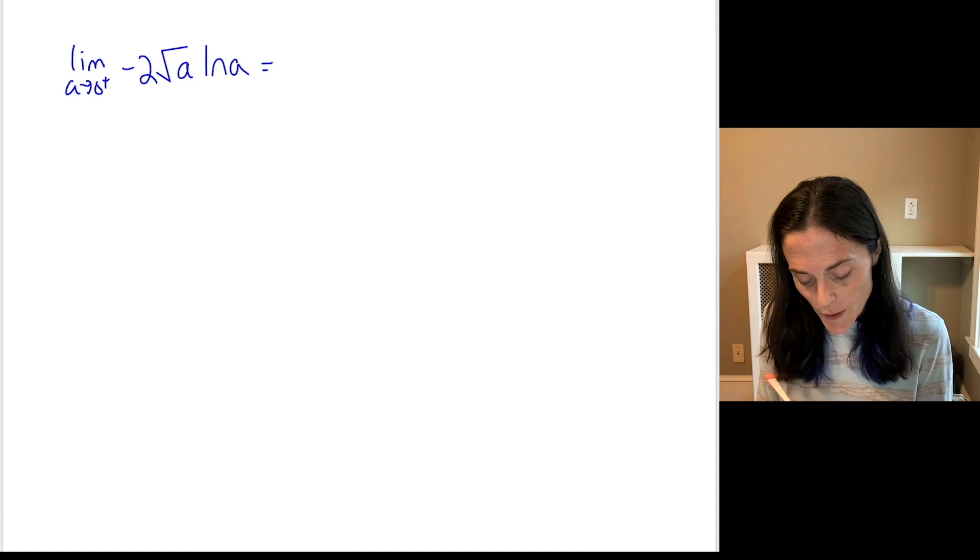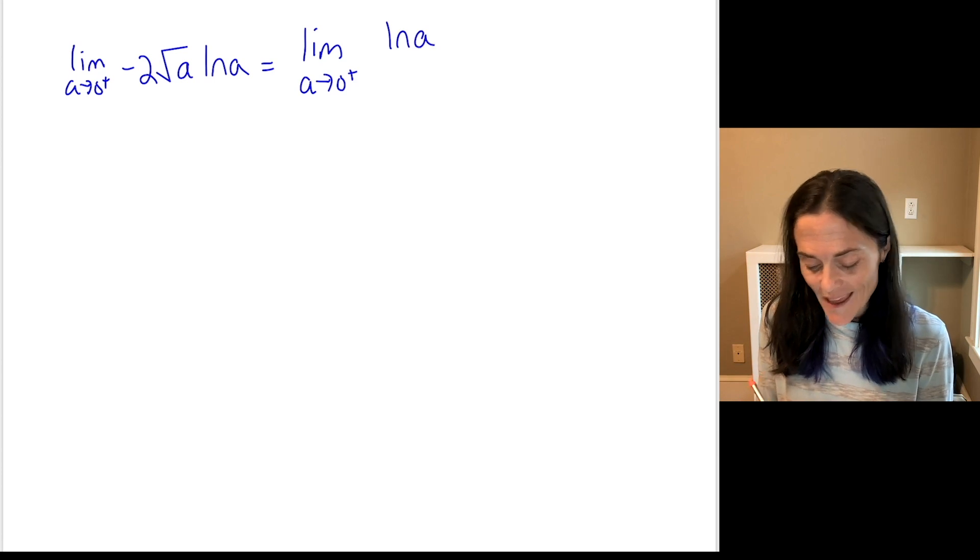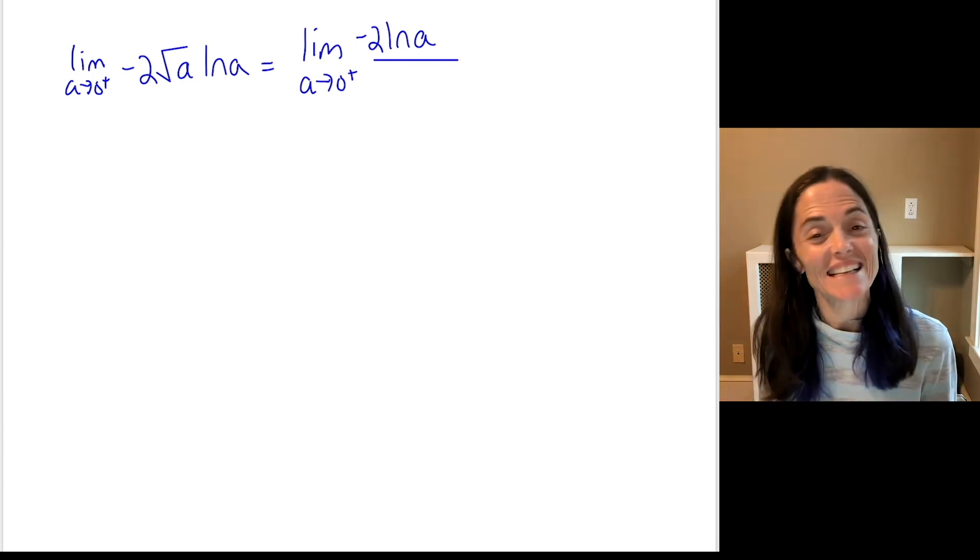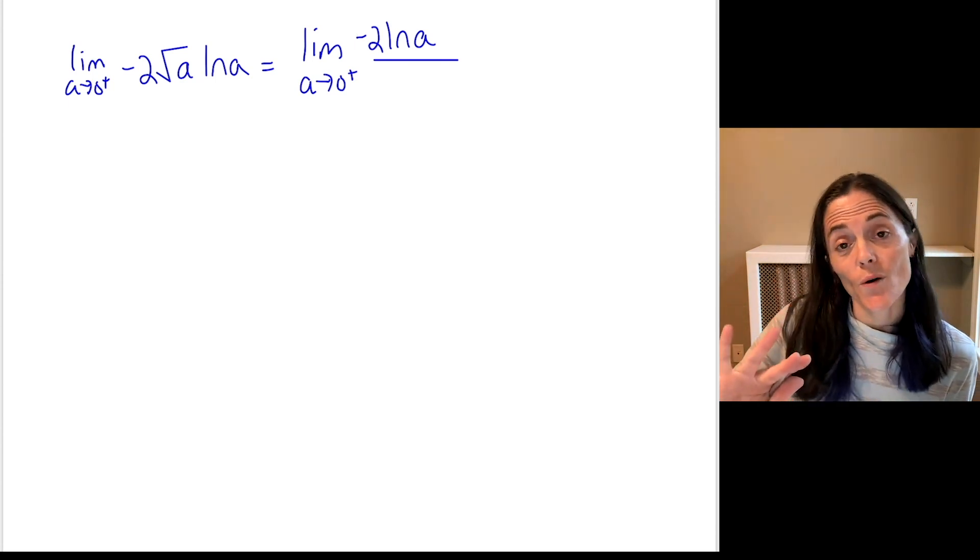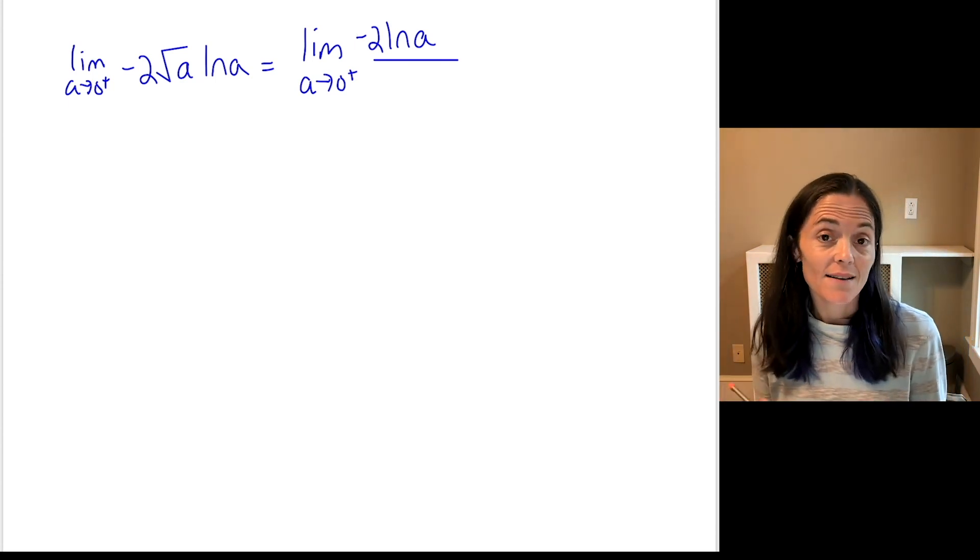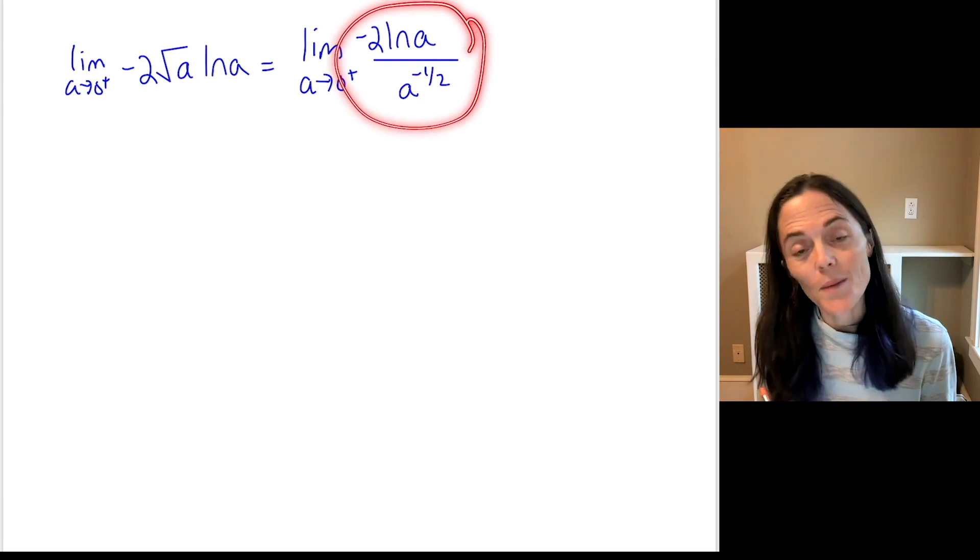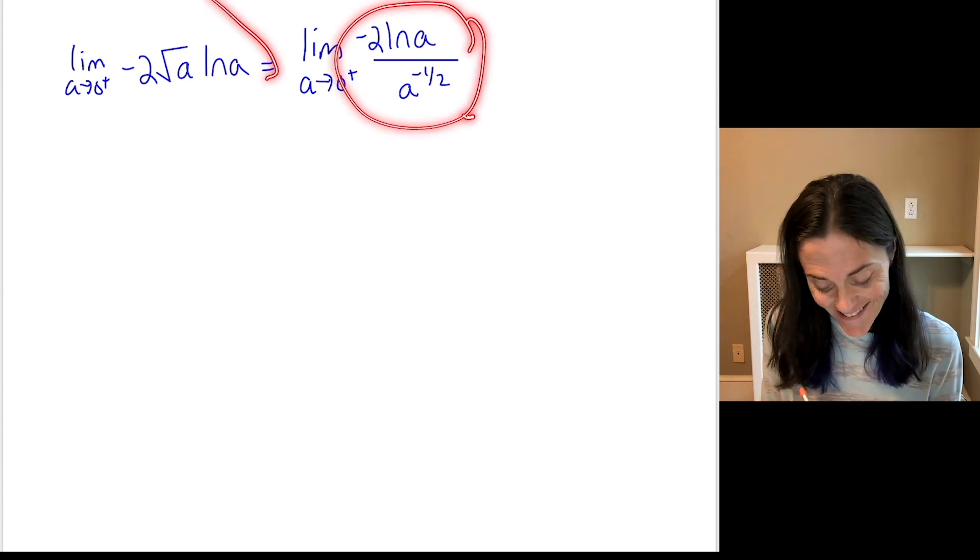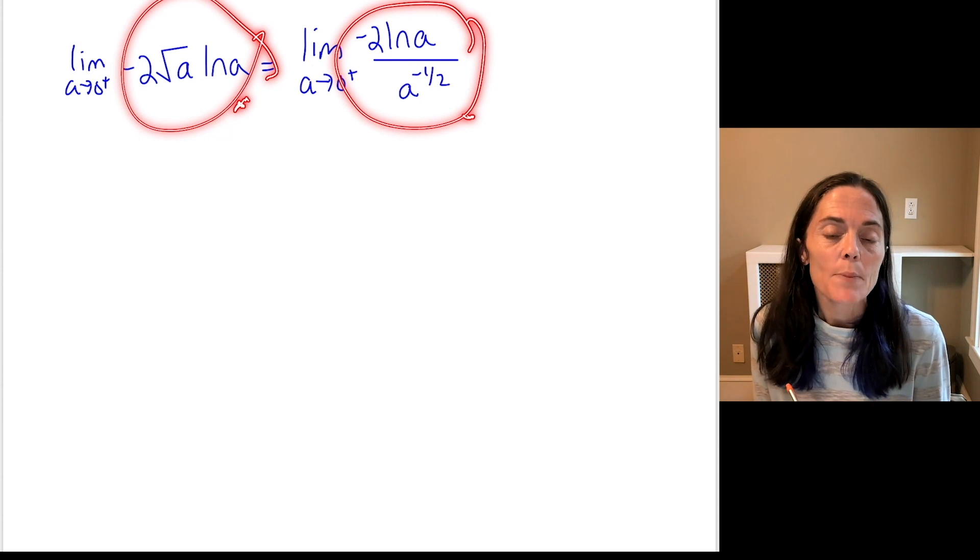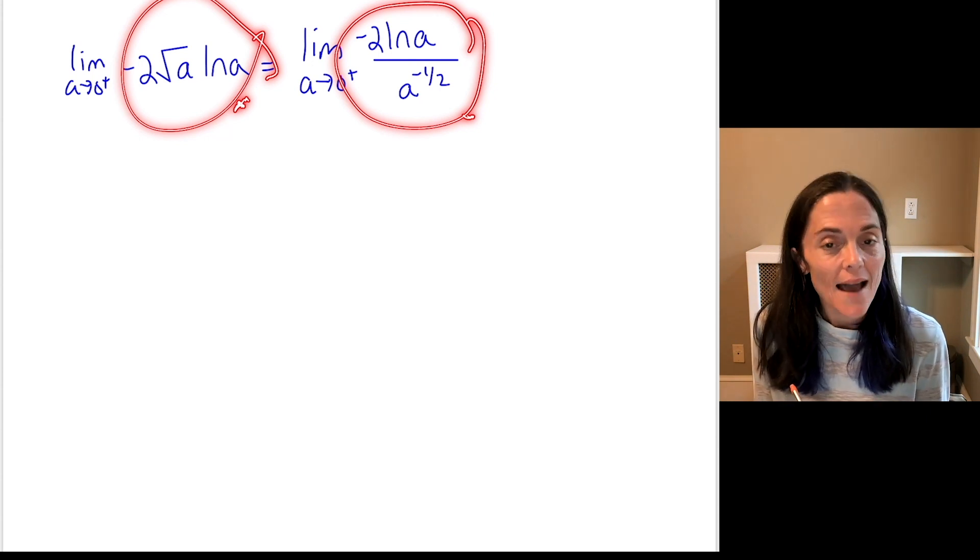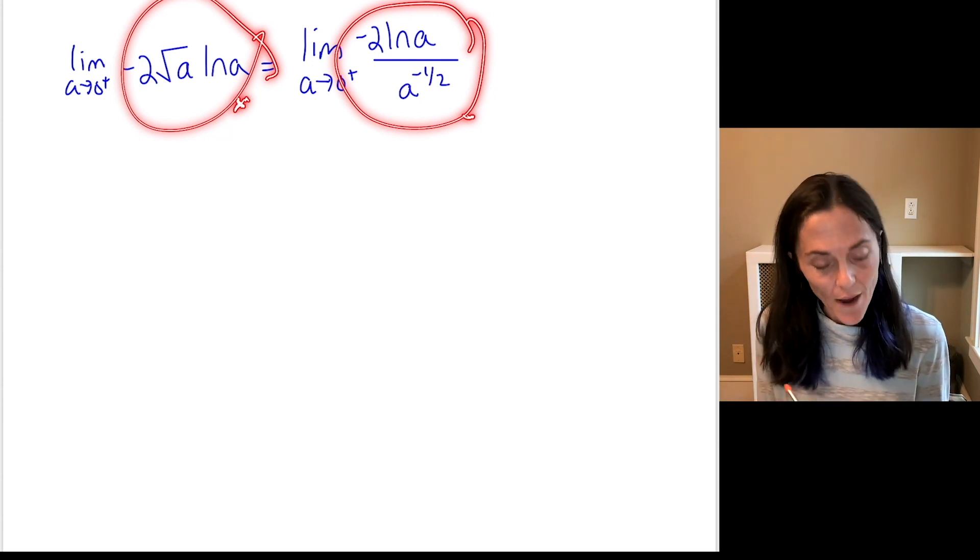We want a limit as a approaches 0 on the right of minus 2 square root a ln a. So, let's rewrite it. This would be a limit as a approaches 0 on the right. I'm going to put the ln a in the numerator. But then, okay, I'll put the minus 2 here too. It's fine. The square root, though, I'm going to write it in the denominator as a power. In the denominator, this would be a negative 1 half. So, you notice properties of exponents, this and this, they are equal.